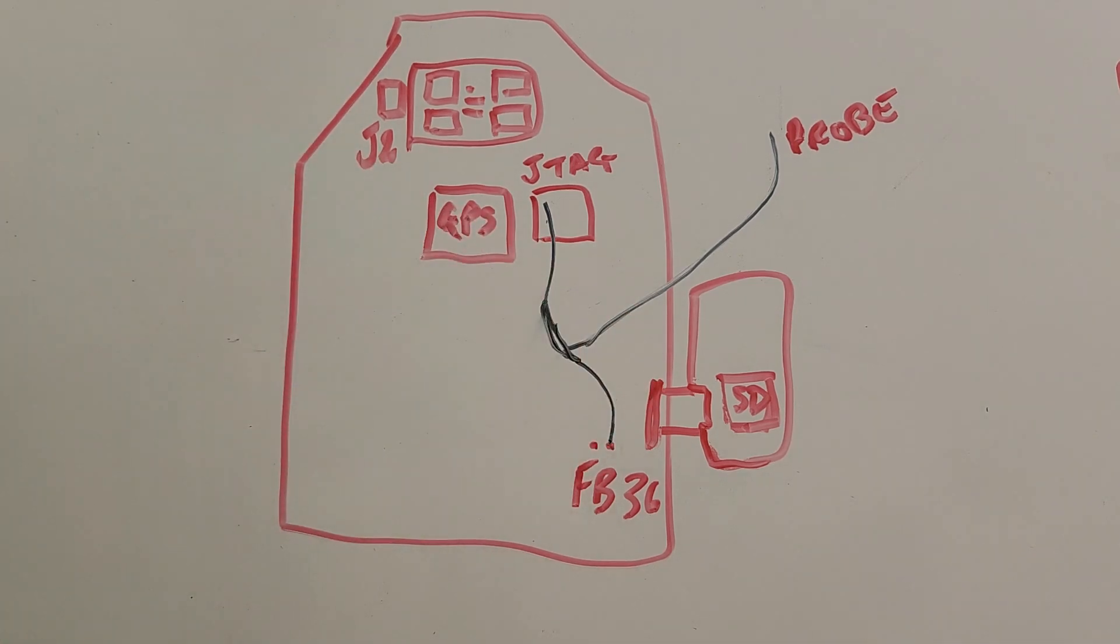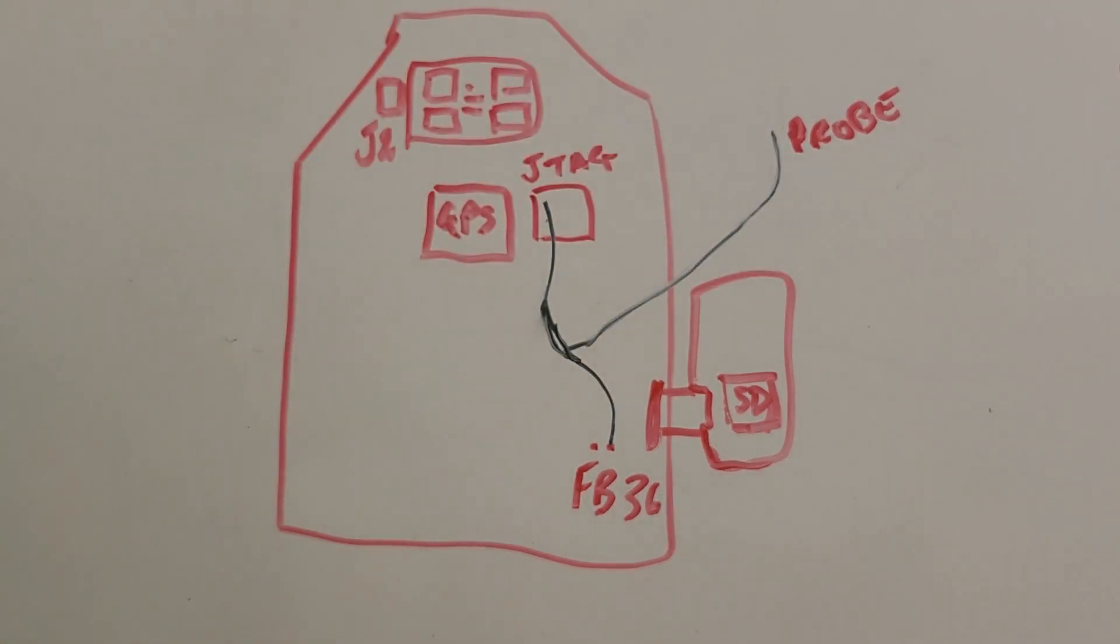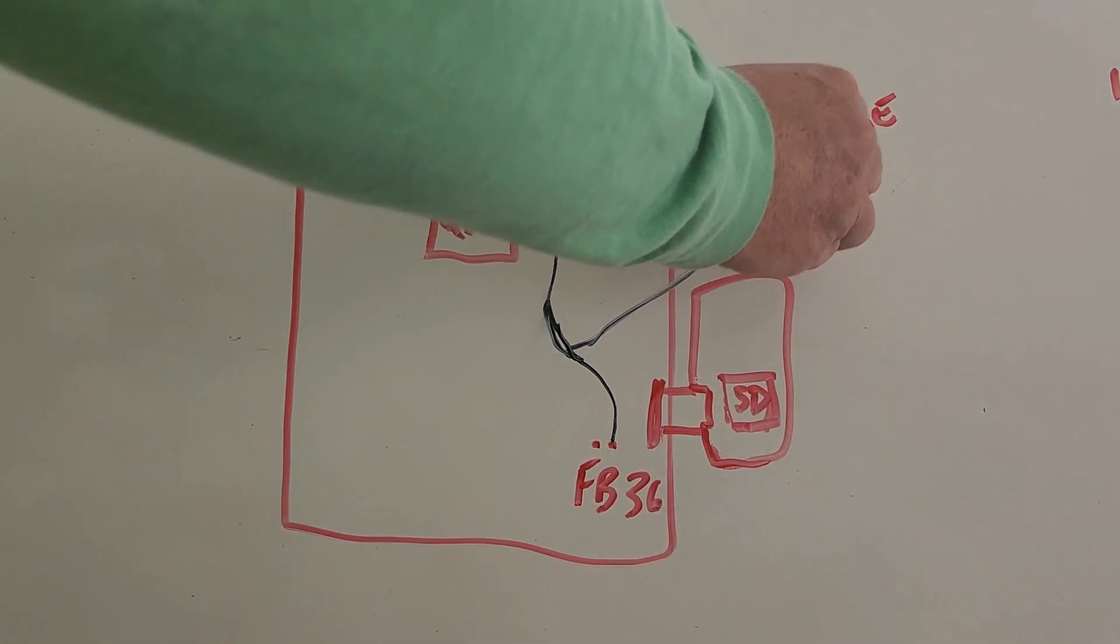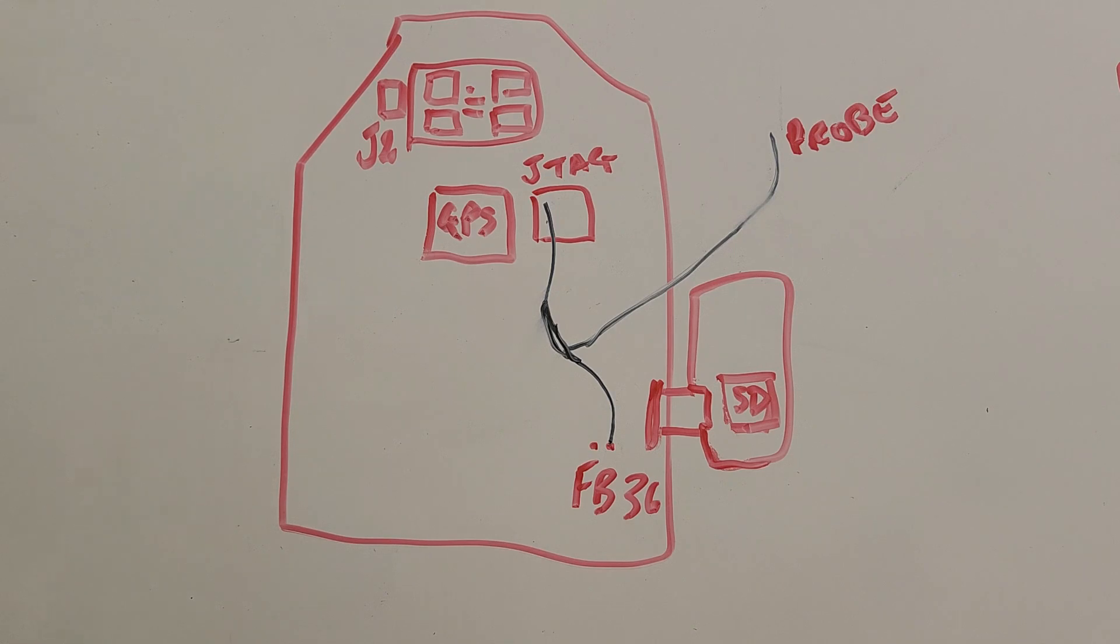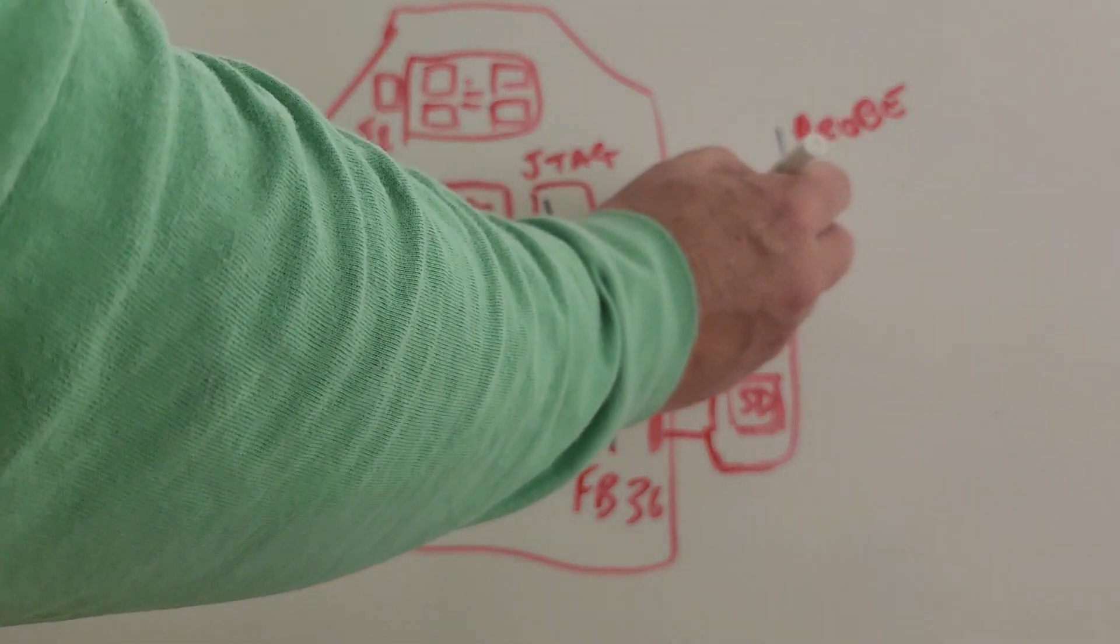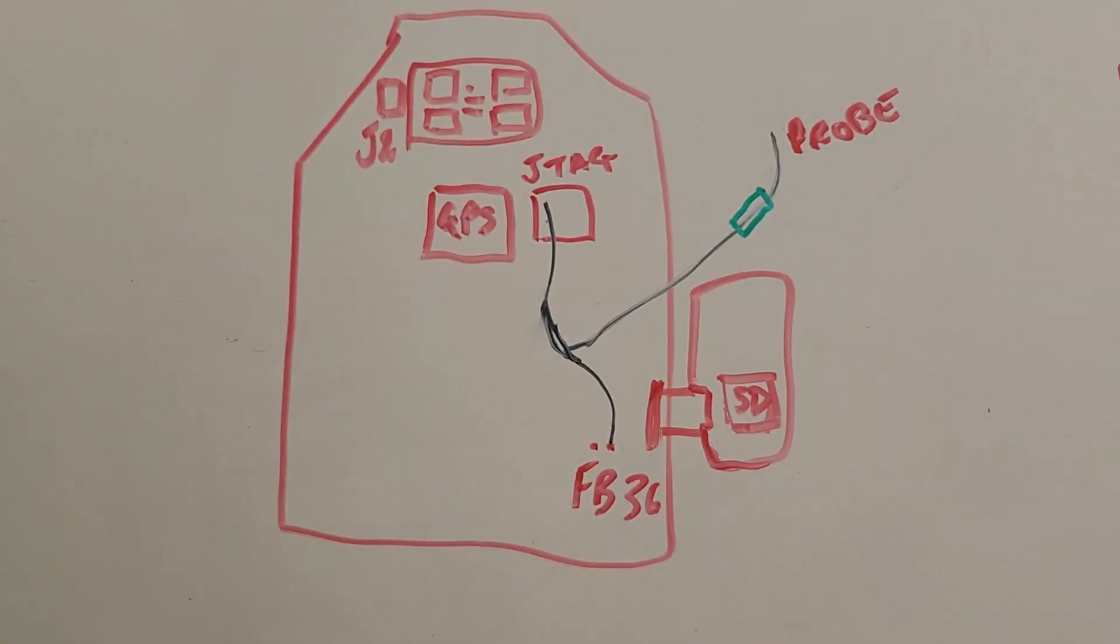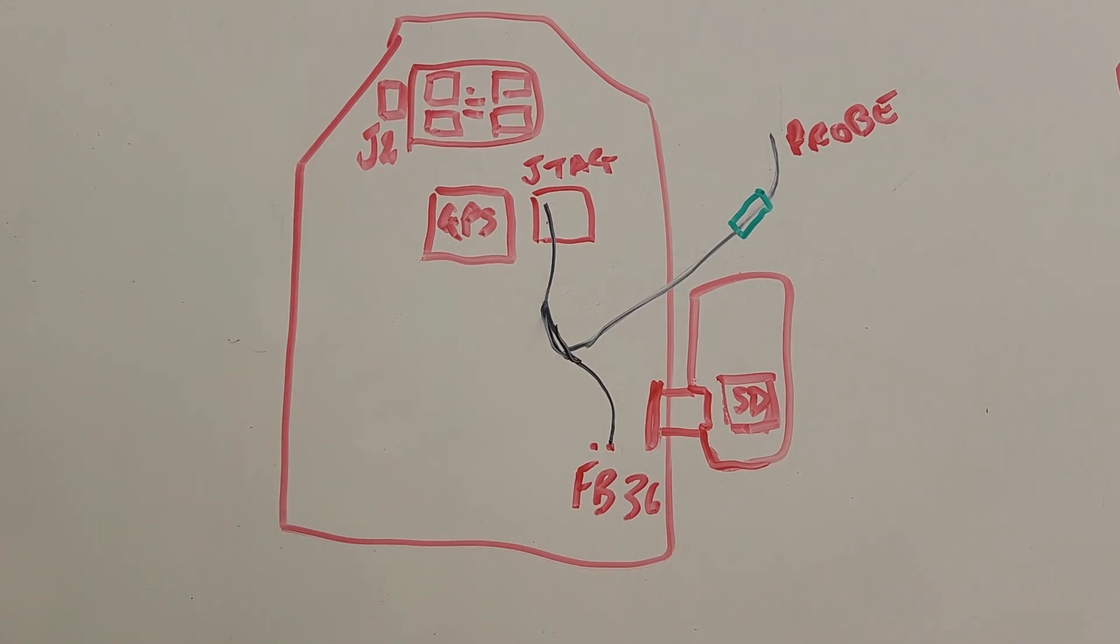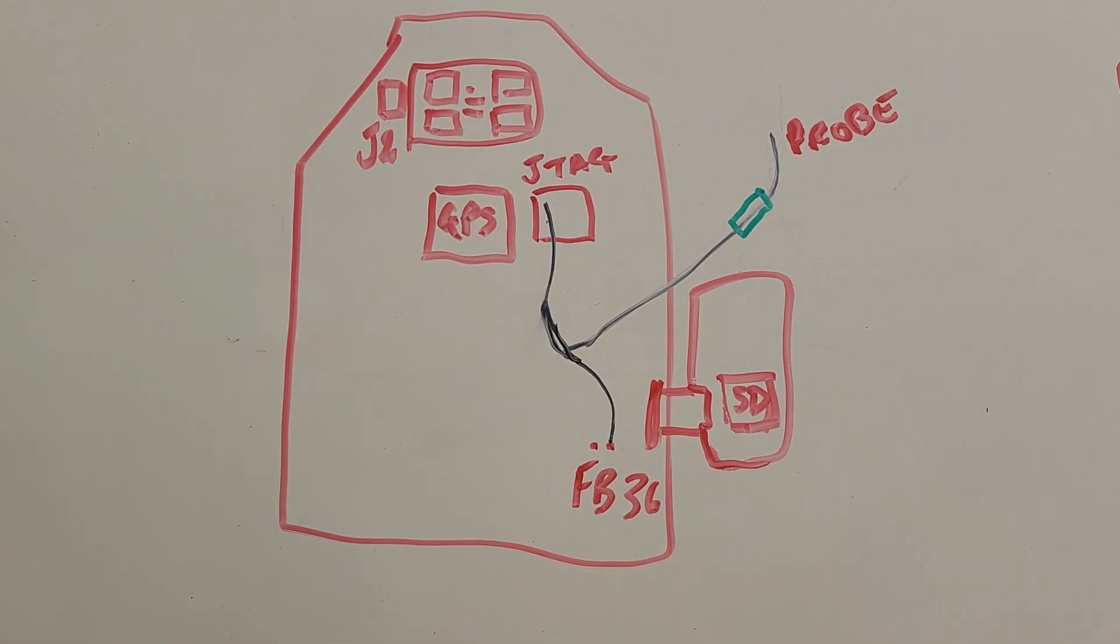What we want to do is, we just want that 1K resistor to be on the probe line. So, very similar to before, we still pull power from the same place. Wherever you're pulling power from is where you're pulling power from, regardless whether it's the FB36 or the JTAG.